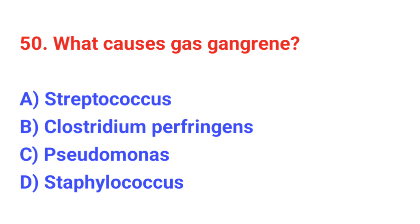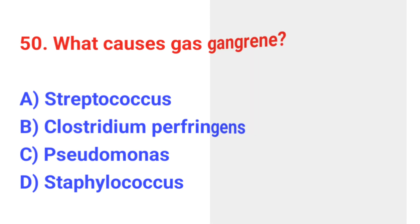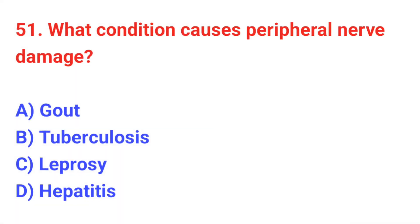Question number 50: What causes gas gangrene? The correct answer is B: Clostridium perfringens. Question number 51: What condition causes peripheral nerve damage? The correct answer is C: Leprosy.